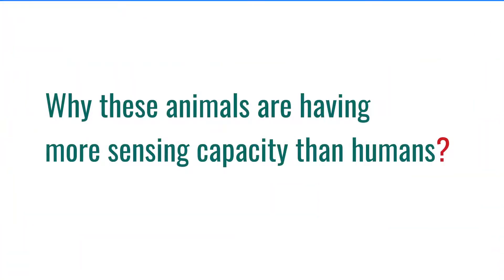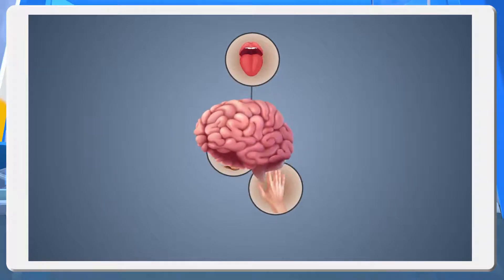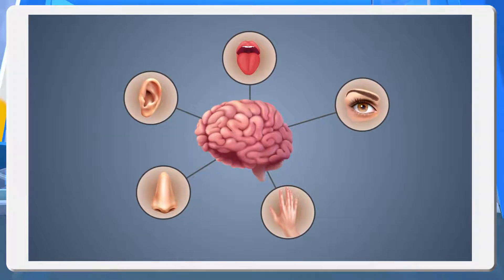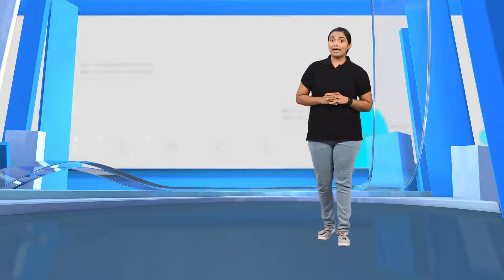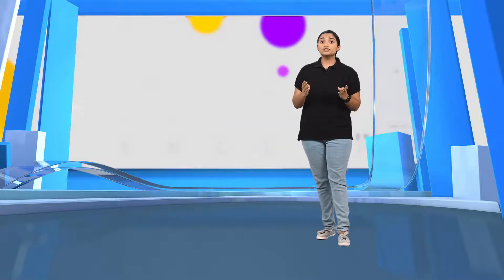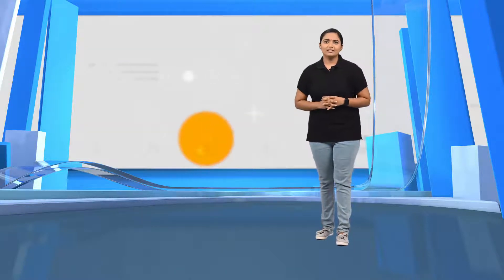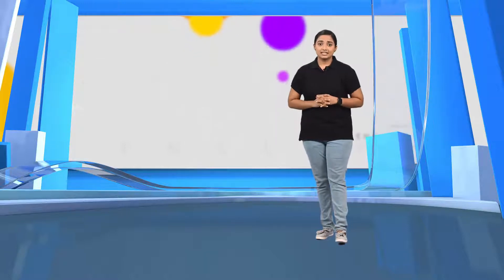Why these animals are having more sensing capacity than humans? Here, the presence of receptors are important. The number of receptors in the sense organs are different in different animals. The surface of a postal stamp is enough to arrange all the olfactory cells in the nose of a human being. But a large scarf is required to arrange the olfactory cells of a dog. We have learned that in sense organs, each stimulus is received by a particular receptor. Then let's complete this table by adding sense organs and their receptors one by one.